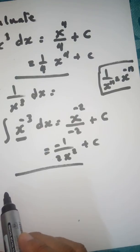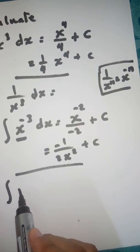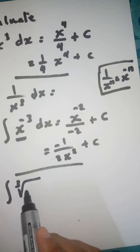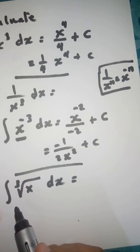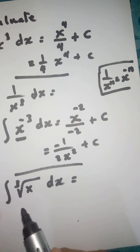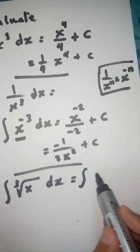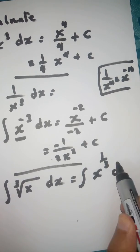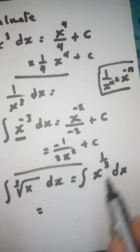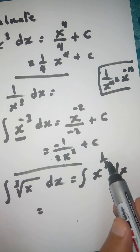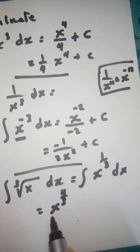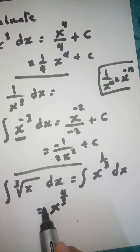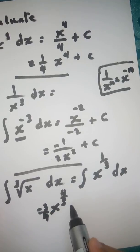Example three: find the integral of the cubic root of X with respect to X. The cubic root is not in power form, so rewrite it as the integral of X to the power 1/3 with respect to X. Add 1 to the power 1/3 to get 4/3, then divide by 4/3, which means multiplying by 3/4, giving (3/4)X to the power 4/3 plus C.